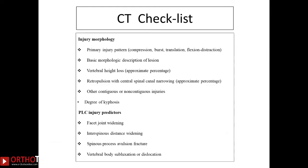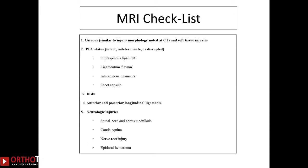The checklist for CT scan assessment: look at the injury pattern and mechanism; determine if it's a compression injury or burst fracture; assess the basic morphology of the lesion; look for vertebral body height loss and any retropulsion of fragment into the canal; assess the degree of kyphosis; and infer PLC injury by looking at facet joint widening, interspinous distance widening, spinous process avulsion fractures, and any obvious vertebral body subluxation or dislocation. On MRI: assess the PLC by looking at supraspinous, infraspinous, and interspinous ligaments, ligamentum flavum, and facet capsules — all will show edema on T2 STIR images. Also assess the disc, anterior and posterior longitudinal ligaments, and neurological injuries including spinal cord, cauda equina, nerve root injuries, and any epidural hematoma.